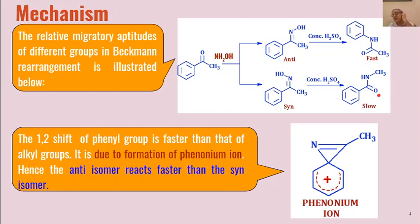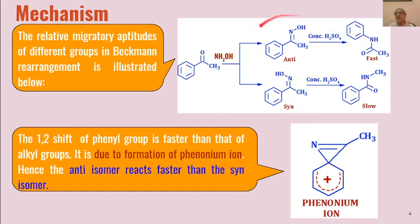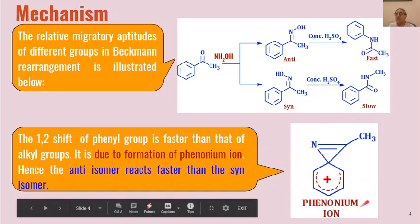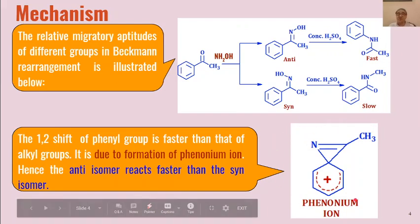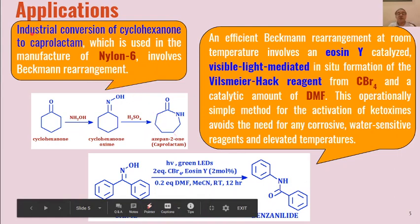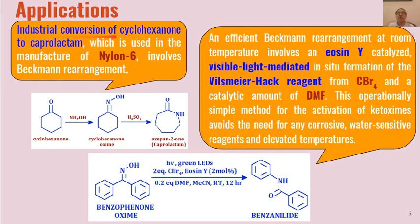Based on the migratory aptitude of different groups, we can determine whether a reaction proceeds faster or slower. The 1,2-shift of phenyl is faster because of the formation of a phenonium ion as the intermediate. The phenonium ion is a very stable cation, so its formation makes the reaction faster.